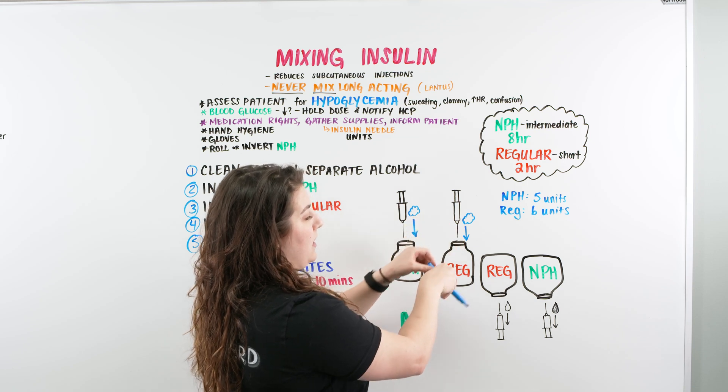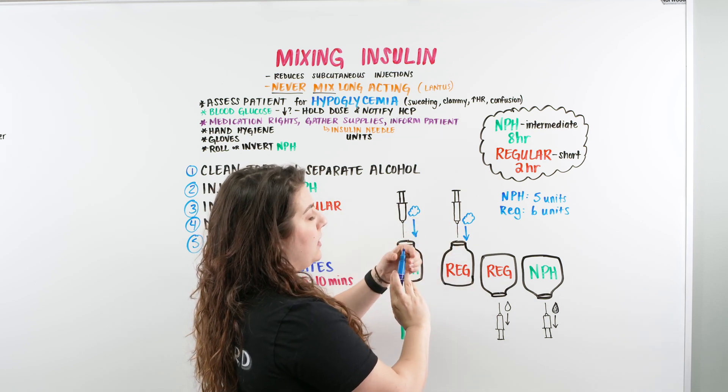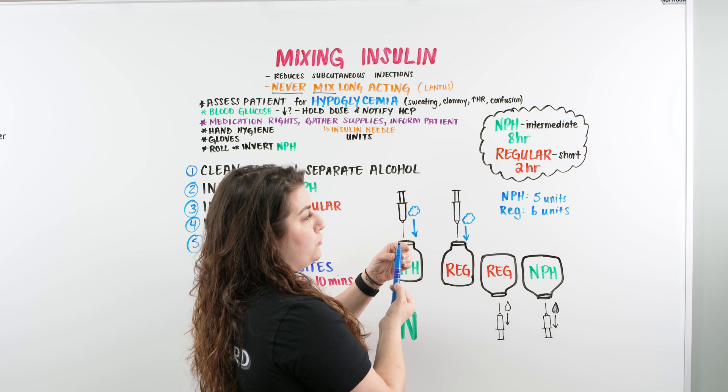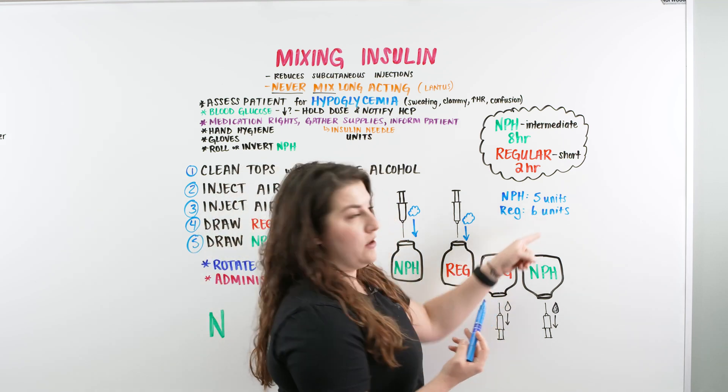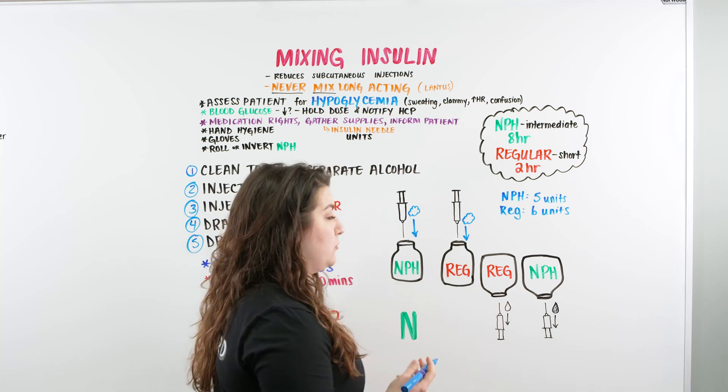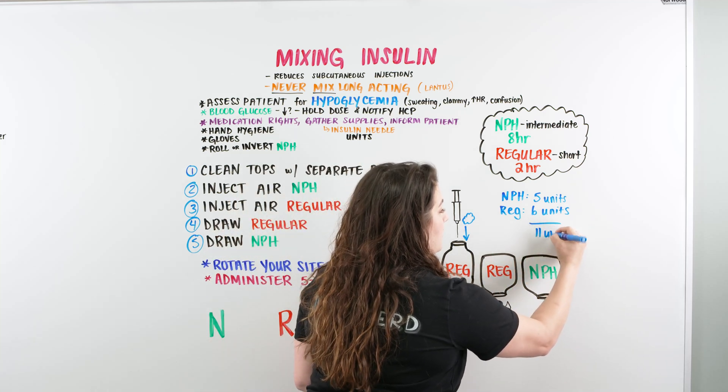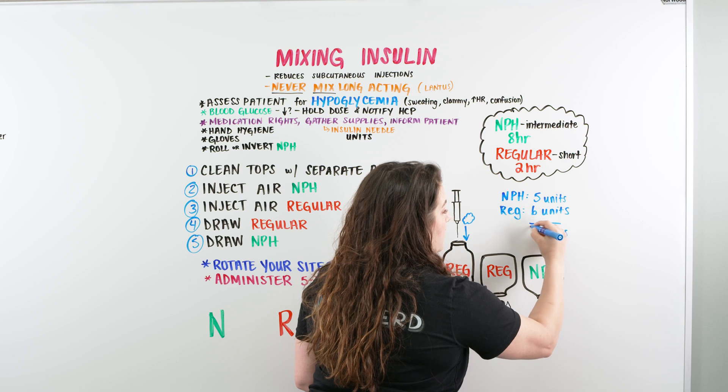Once you're done, you're going to invert with that vial on and pull back your six units of regular, and then go to the NPH and pull back your five units of NPH. And you should have a total of 11 units in your syringe.